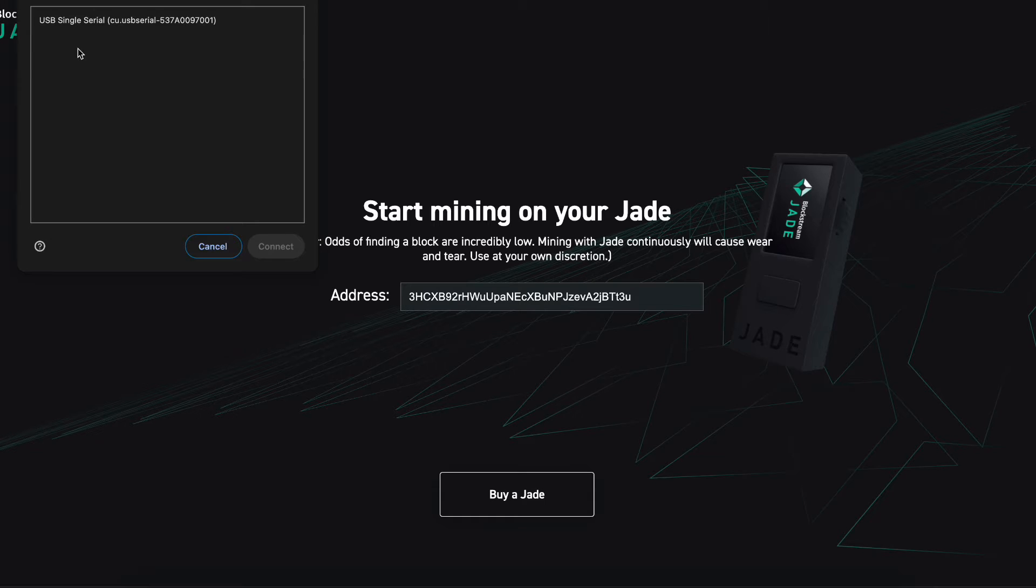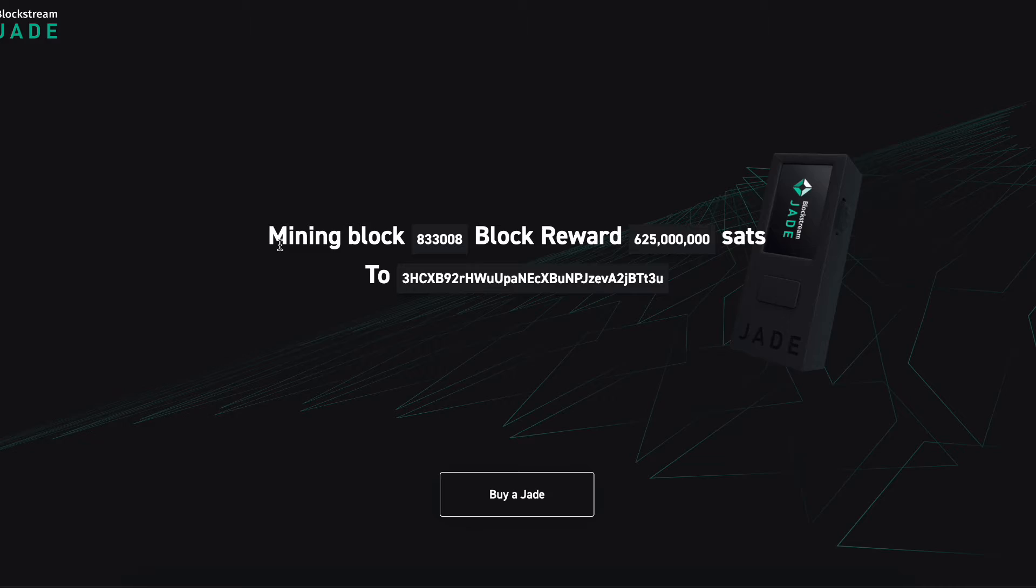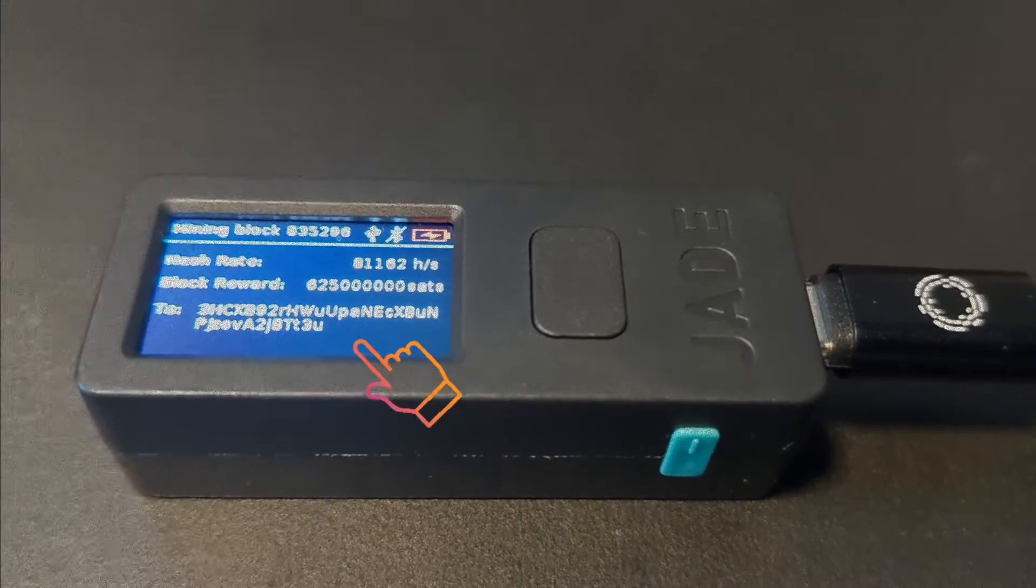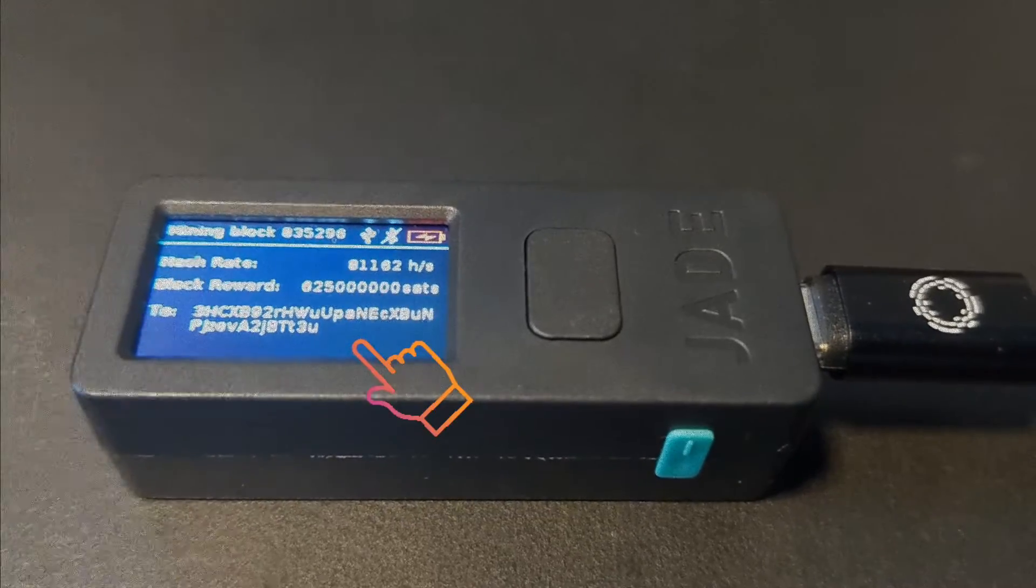These devices have a very small battery and need to be plugged into the computer to power it up and have it connected to the internet at all times when you are mining with it. So we're going to plug it in and press start. Now you can see the current block and hash rate in hashes per second. This is the block reward and where that block reward would be sent to you if you correctly guessed it.